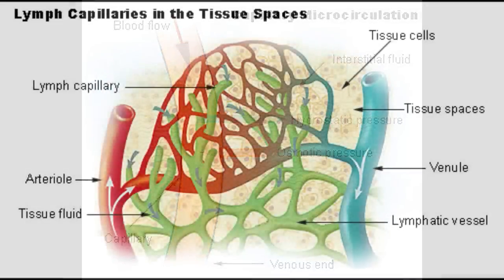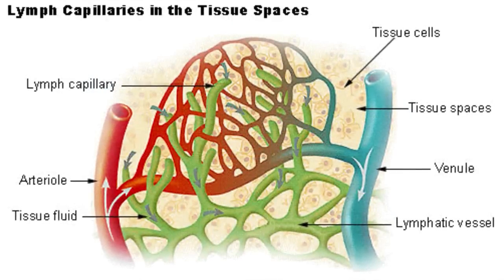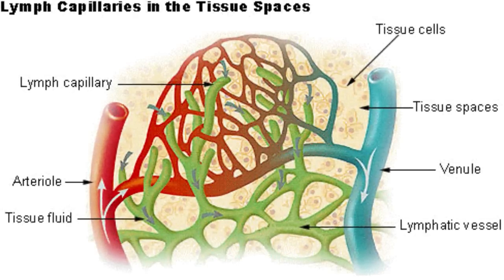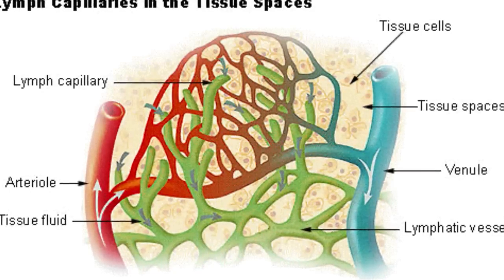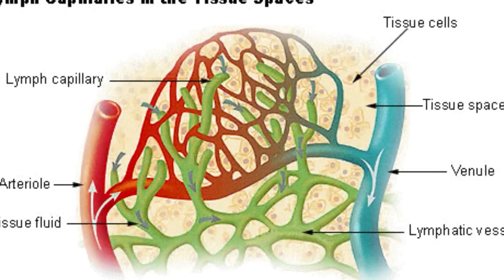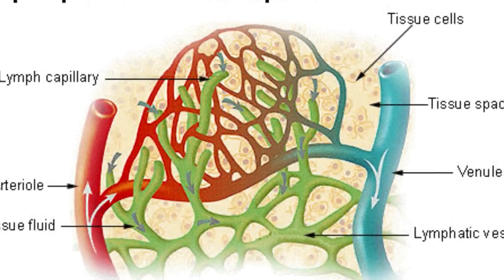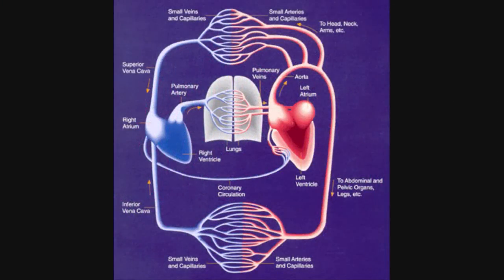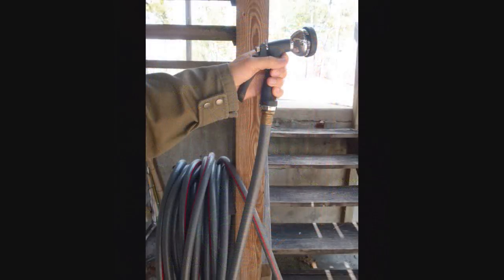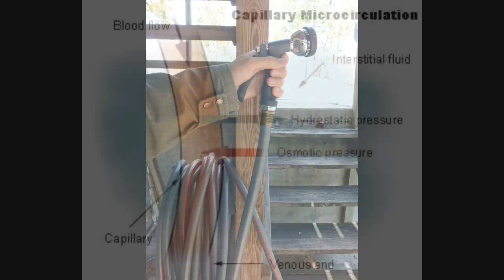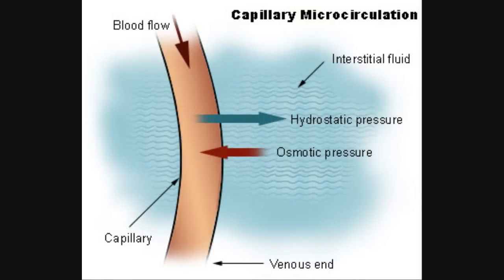The remaining waste in the interstitial fluid that cannot pass through the capillary semi-permeable membrane, largely due to size or other structural factors, will be eliminated through the lymphatic system if functioning properly. The lymphatic system is similar to the interstitial fluid's vacuum system. Upon exiting the capillaries, blood flows back into the venous system, starting from venules, going into veins, proceeding into the large-diameter vena cava, and returning once more to the right side of the heart. Thus, we see the similarities between pressurized water and the hydrostatic flow from the capillaries in our own bloodstream.